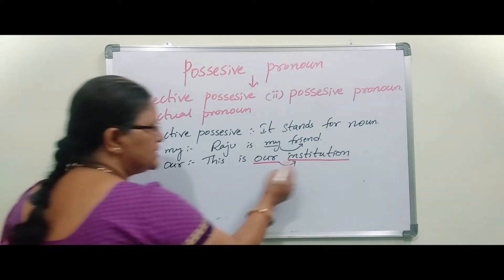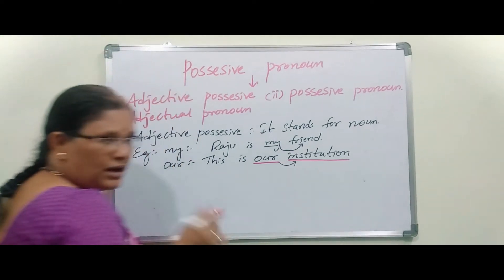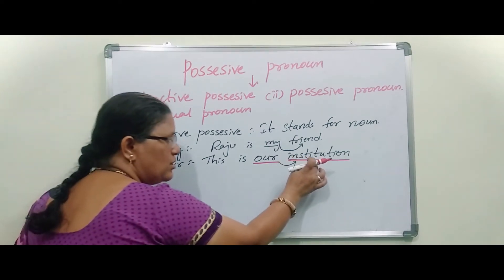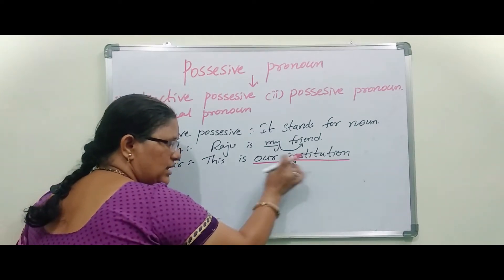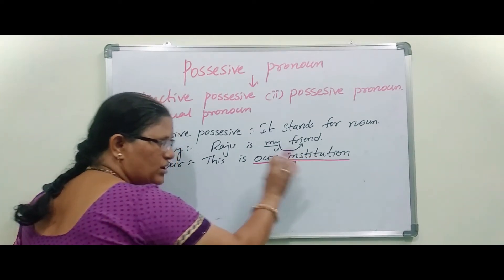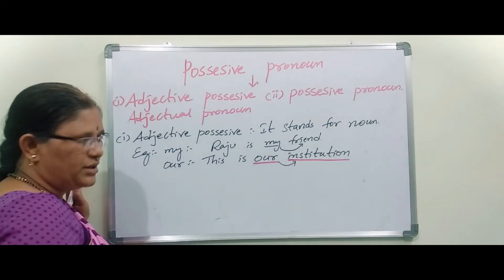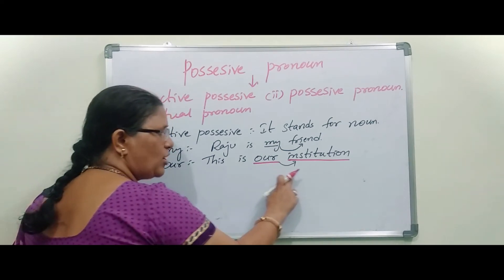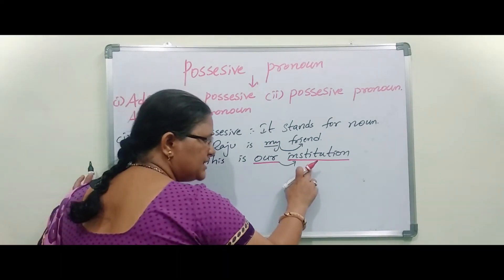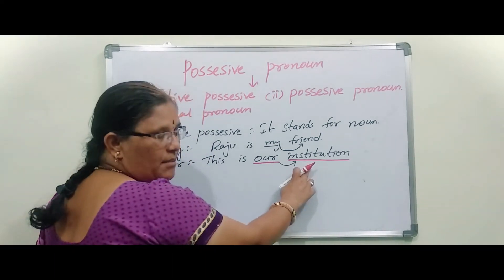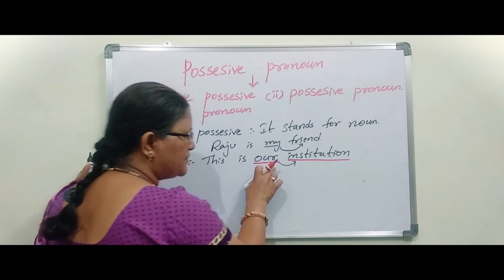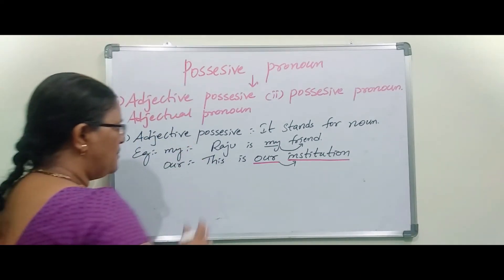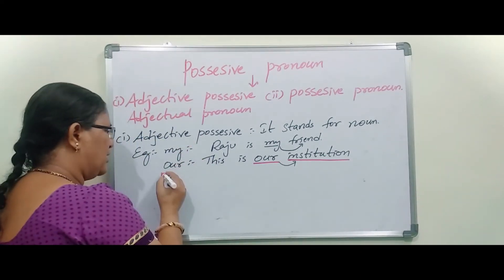Because 'our' is talking about that common noun, and always adjective talks about a noun. Here also, this pronoun is talking about this common noun. That's why it comes under Adjectual Pronoun.